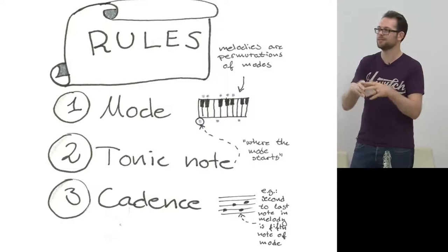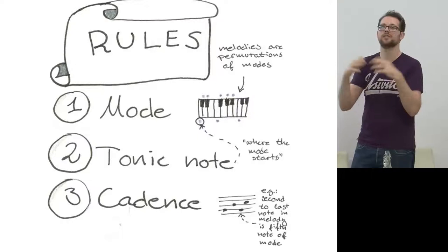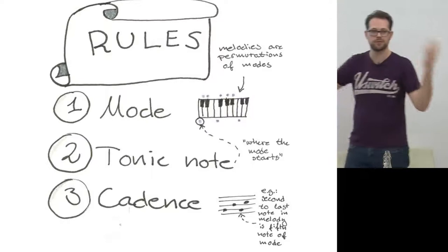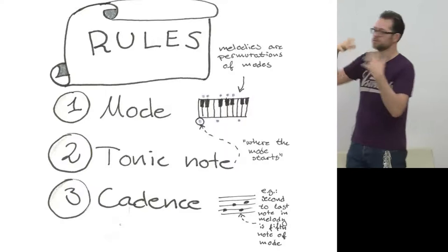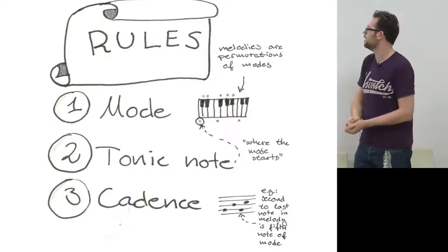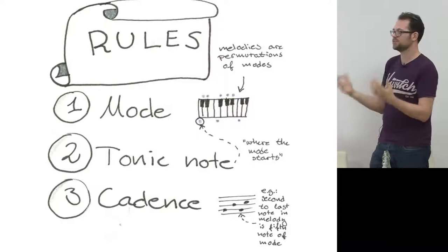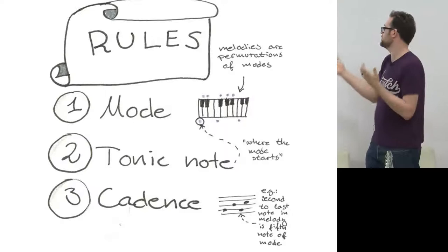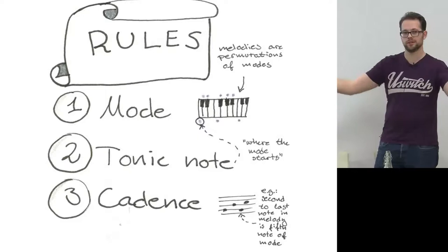A melody that sounds nice to our ears is a permutation of those notes. Notes in a common mode in Western music sound pleasing to us due to our culture and upbringing. You can define a rule around selecting a specific mode, or leave it unbound with no mode. You can choose to bind the tonic note — defining what note the piece is set in. There's also a third concept called cadence, which states that a particular note in the sequence of the mode should appear at a particular position in the generated melody — for example, the second-to-last note should be the fifth note of the mode.